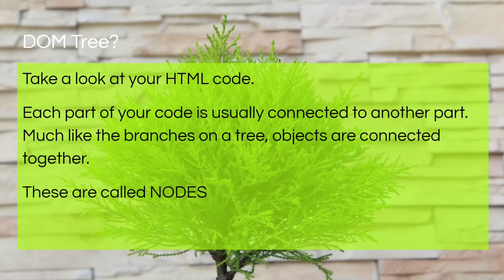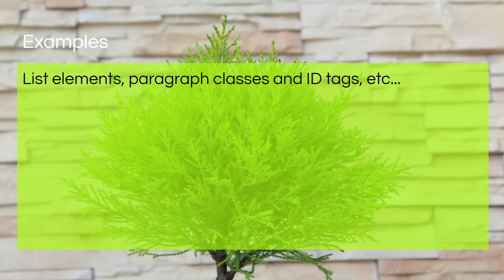These particular objects are called nodes. When we talk about calling the node, manipulating the node, or adding the node, we're talking about elements that exist in the DOM tree. For example, a paragraph tag is a node in the DOM tree, and the body tag itself is a node on the DOM tree. Things like list elements, paragraph, classes, tags — they all exist in the DOM tree.